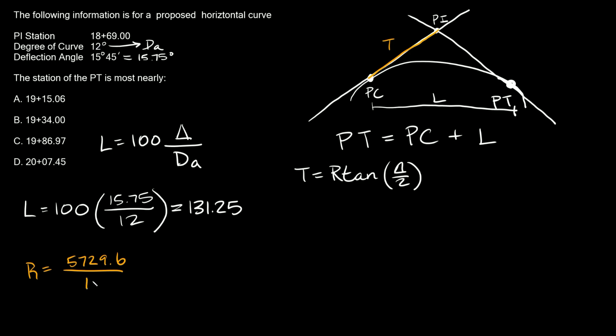So then 5729.6 divided by 12 is approximately 477.47. And this is all in feet. So L over here was in feet and the radius is also in feet.